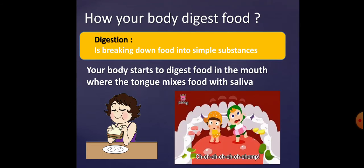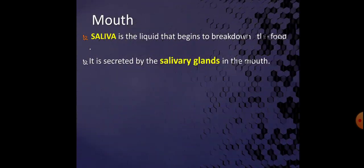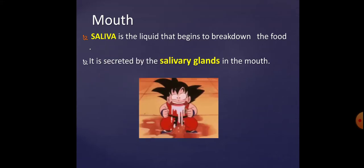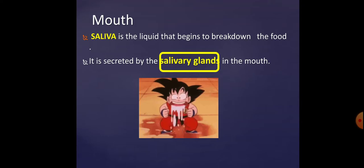We break the food down into small pieces by our teeth, and it is also mixed with saliva. Saliva is the liquid found in our mouth and is secreted by special parts called salivary glands. The salivary glands secrete saliva, which makes the food moist and soft so we can swallow it easily.